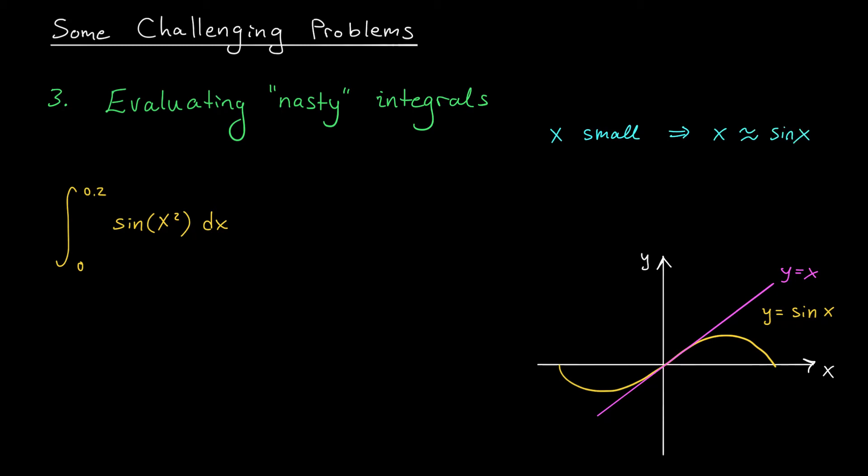But hold on a second. If x is small, then so too is x squared. So by the same arguments, x squared and sine of x squared should be approximately equal near the origin.